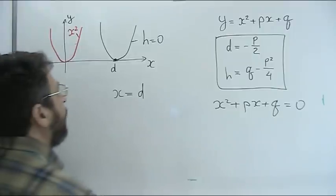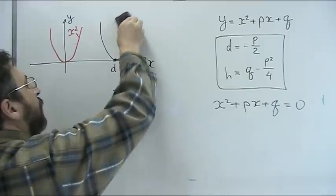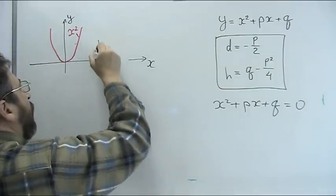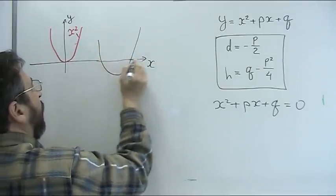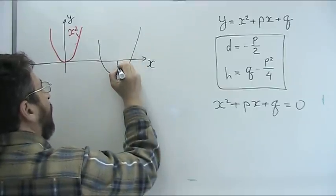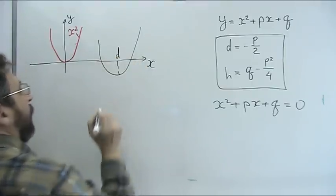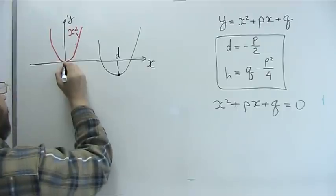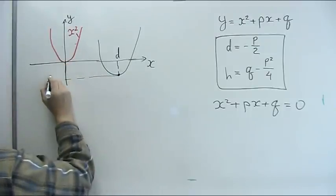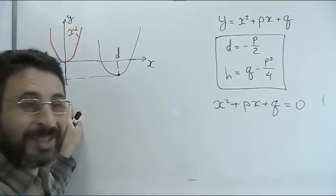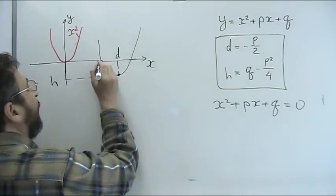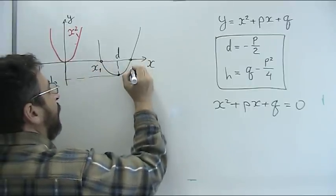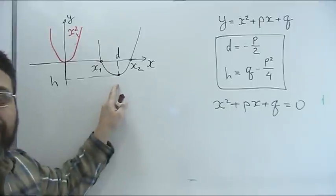In the case when h is smaller than 0 and h is negative, the plot of my parabola will look in this way. The minimal point will be here at d, x = d. And this value here will be h. And h is negative now. And the parabola will cross x axis in two points x1 and x2. They are roots of my equation.